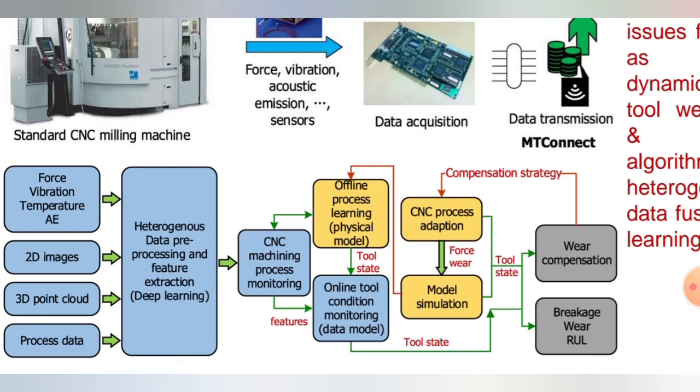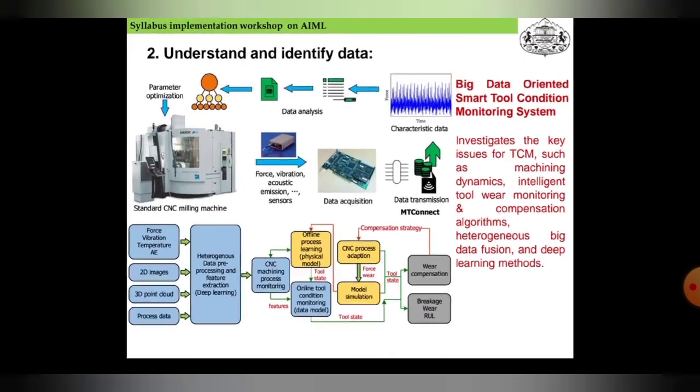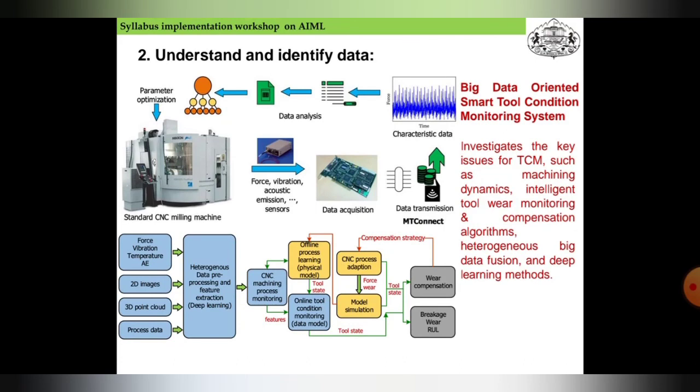The tool state is connected to breakage, wear, and tool wear compensation, which connects to the compensation strategy sent to CNC process adaptation. Force and wear data is sent to model simulation, which processes offline learning physical model and sends it back to tool state for online tool condition monitoring. This is the generalized flowchart of how the big data oriented smart tool condition monitoring system works.